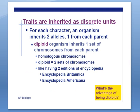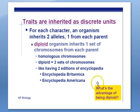Traits are inherited as discrete units. For each trait, an organism inherits two alleles, one from each parent. Diploid organisms inherit one set of chromosomes from each parent — one of each of the homologous chromosomes, giving 23 pairs in humans. It's almost like having two sets of encyclopedias: two copies for every trait. Just as Encyclopedia Britannica and Encyclopedia Americana might describe 'dogs' slightly differently because of different publishers, the alleles on two different chromosomes can be different versions of the same trait.